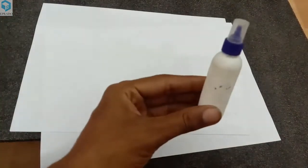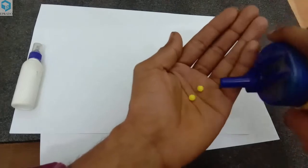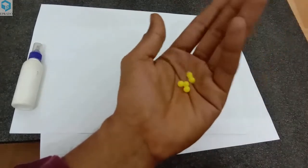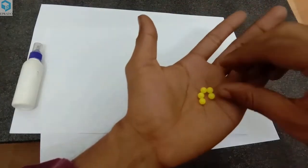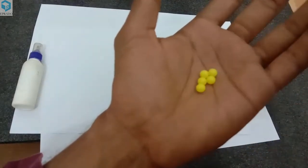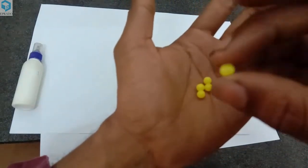Then we need some glue, take some glue, and we need some beads. You can take any kind of bead, so we have taken these beads. They should be round and the diameter should be a little smaller. Any beads that you get you can use for this experiment. Take some beads.